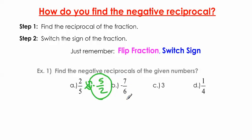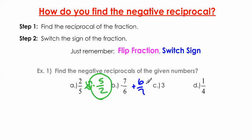What about negative 7 over 6? Find the negative reciprocal of negative 7/6. Step 1 is to flip the fraction: 7/6 becomes 6/7. Then switch the sign — we have a negative fraction, so this becomes a positive fraction. The negative reciprocal of negative 7/6 is positive 6 over 7.